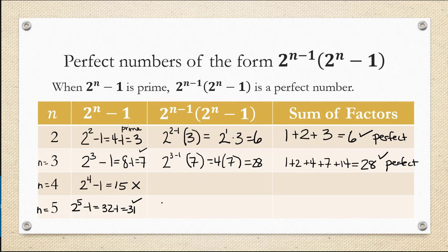That's going to give us 2 to the 5th minus 1 times, we already found 2 to the 5th minus 1 is 31. 2 to the 4th then is 16 times 31, which is 496. Now we look at the divisors.